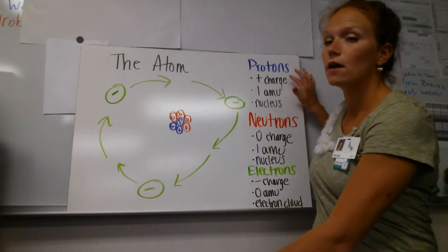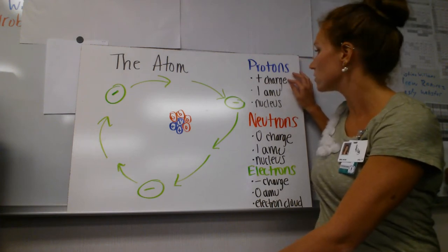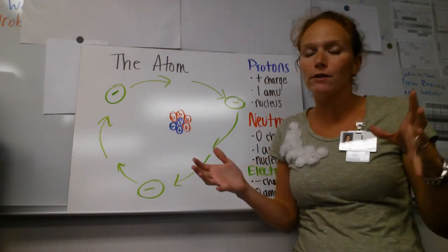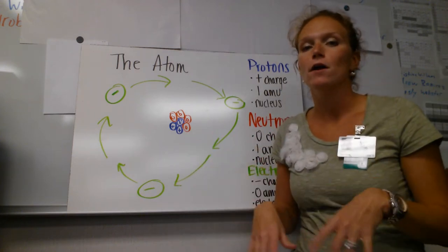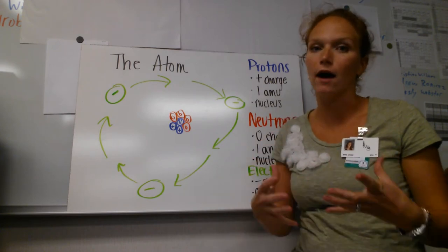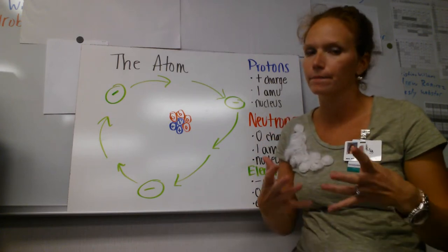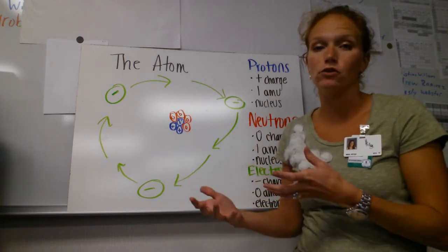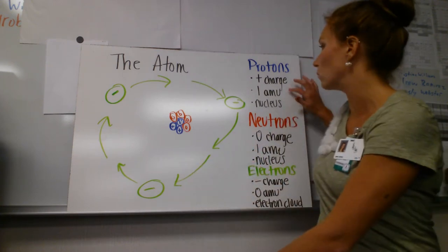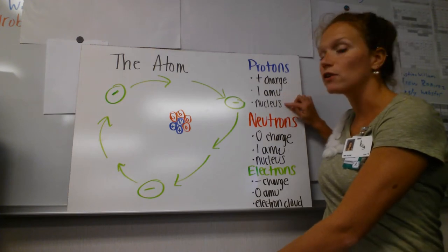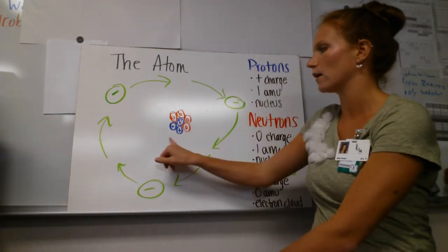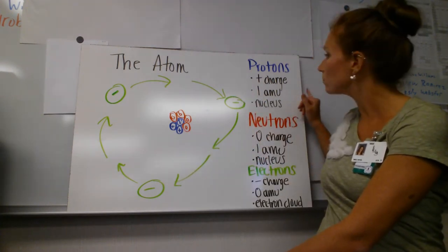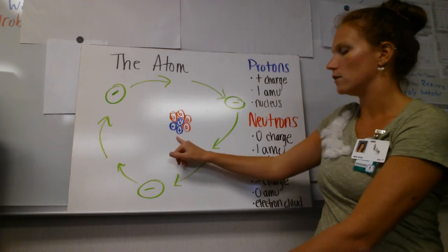First up we've got the proton. Protons have a positive charge. They are worth one atomic mass unit — that's the special unit we use when talking about the size of atoms. So protons are worth one atomic mass unit, and they're located in the nucleus. In this drawing, they're located here in purple. Positive, worth one atomic mass unit, in the nucleus.